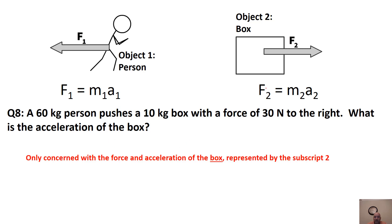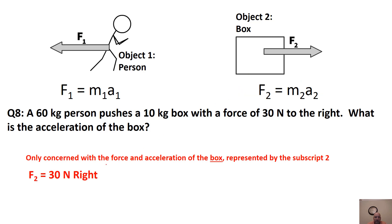Now, what is the acceleration of the box? This goes back to Newton's second law — we're just looking at the box. The box is being pushed with 30 newtons to the right, the box has a mass of 10 kilograms, and we're solving for its acceleration. Using subscript 2 for the box: F = ma, rearranged as a = F/m.